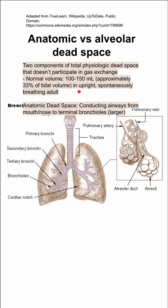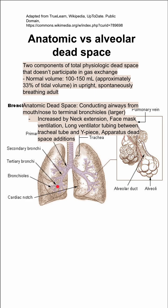Your anatomic dead space consists of the conducting airways from your mouth and nose all the way down through the trachea to the terminating bronchioles, as shown in this picture.